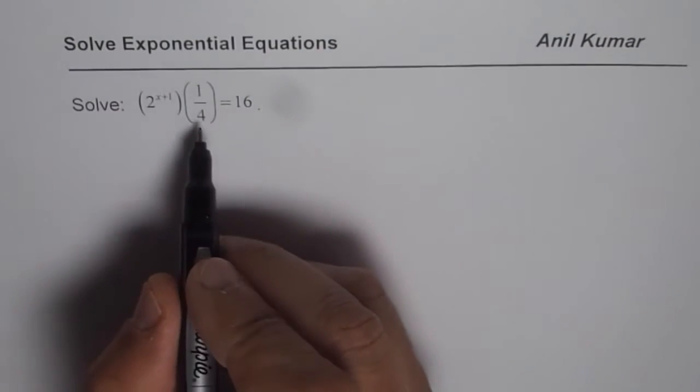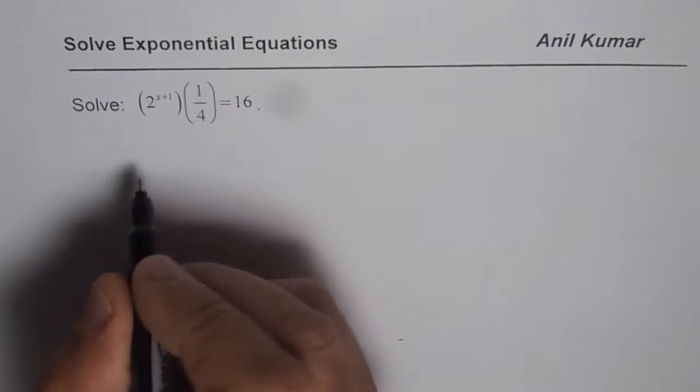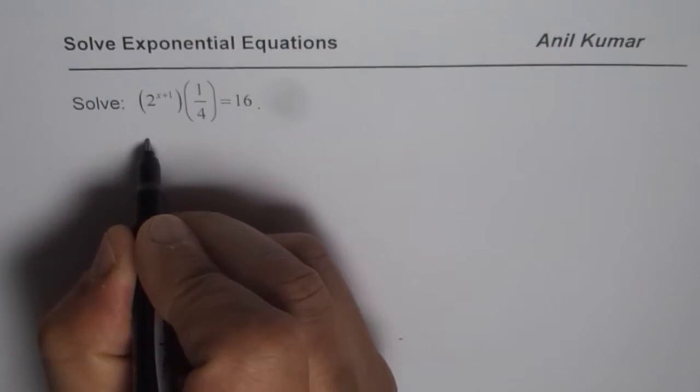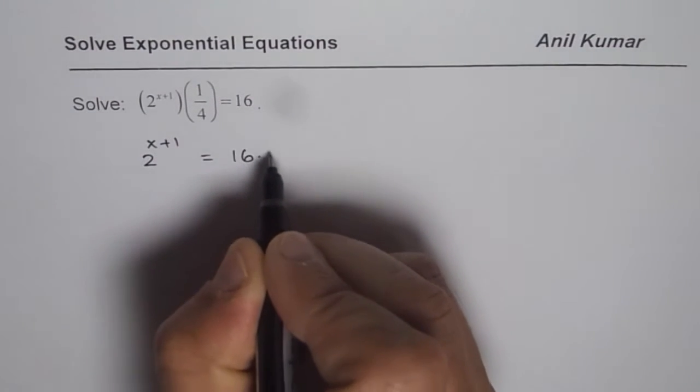To do so, we can cross multiply by 4, or we can multiply by 4 on both sides. Then what we get is 2 to the power of x plus 1 equals to 16 times 4.